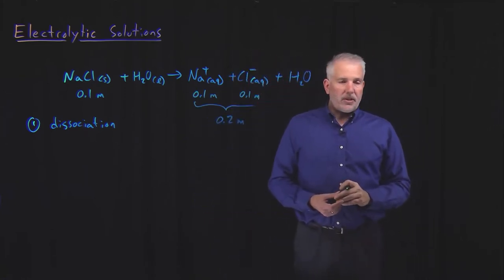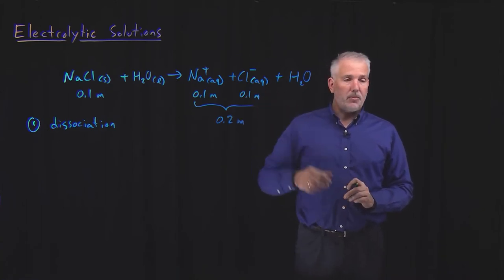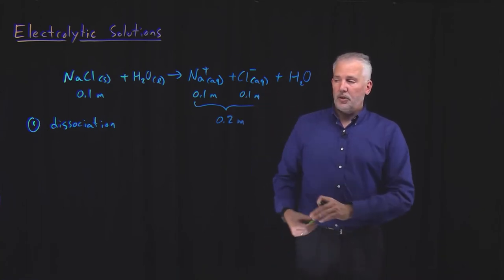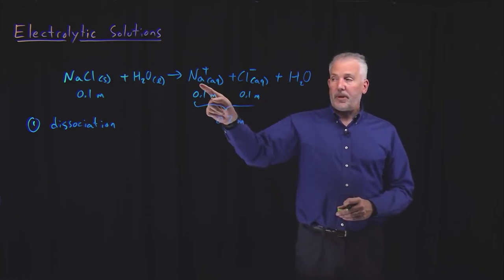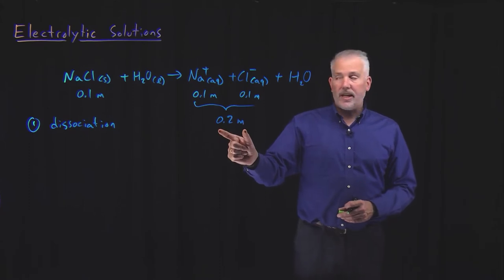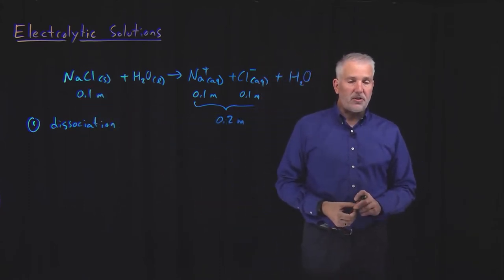So if we think back to the colligative properties and ask ourselves how much the freezing point will depress or how much the boiling point will be elevated in the solution, that may only be proportional to the amount of solute I have, but I have twice as much solute as I thought I had if I was not considering the fact that the solute dissociates.